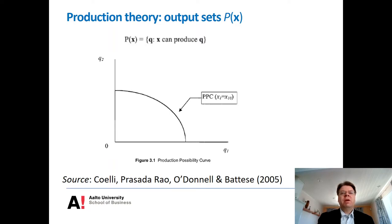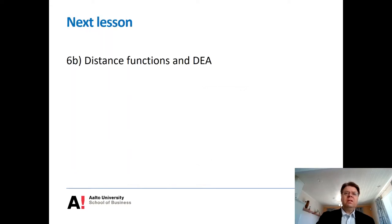So according to production theory, with given input resources there are infinitely many possible output combinations characterized by the output set P(X). We need a mapping from the input vector to a set of possible output vectors, rather than a single scalar-valued output. To characterize this set, it is convenient to have functional representations of the technology. This forms the next topic: distance functions as representations of the technology, primarily using the DEA approach, which is immediately applicable to the multiple-output setting.